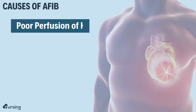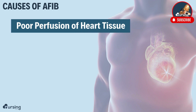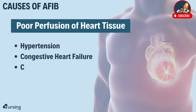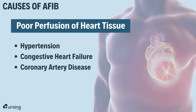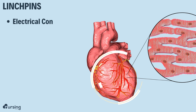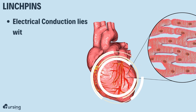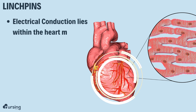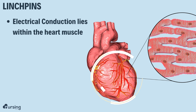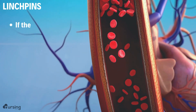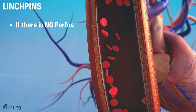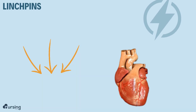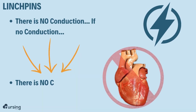So what are some causes of atrial fibrillation? Well, this all really comes down to poor perfusion of that heart tissue, right? In instances such as hypertension, congestive heart failure, coronary artery disease. You have to remember that that electrical conduction system lies right here within this heart muscle itself. If there is no perfusion, then there is going to be no conduction. And if there's no conduction, there's going to be no contraction.